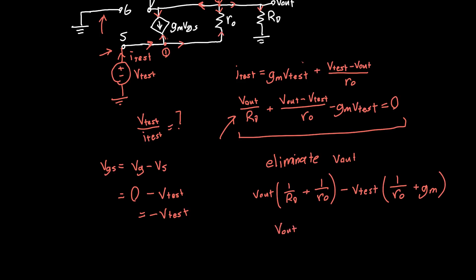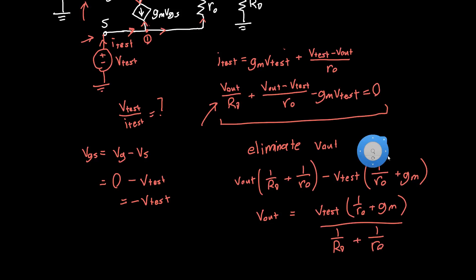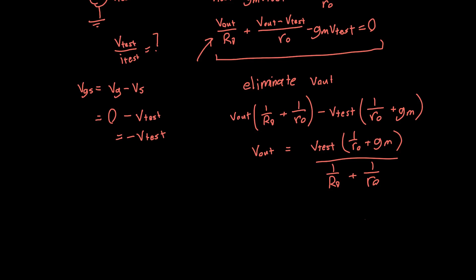And rearranging this, we can see that V out is equal to V test times 1 over RO plus GM over 1 over RD plus 1 over RO. Now, after going through the rest of the fairly nasty algebra, ultimately you'll get this result. V test over I test is equal to RD plus RO over 1 plus GM RO. And this is the input resistance.